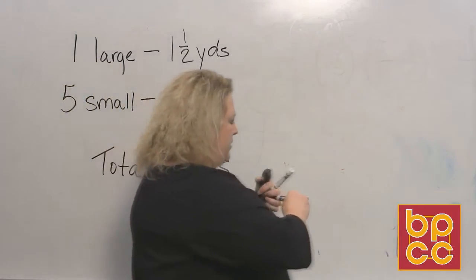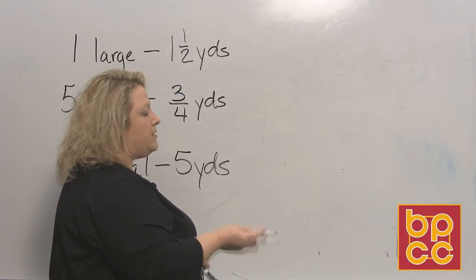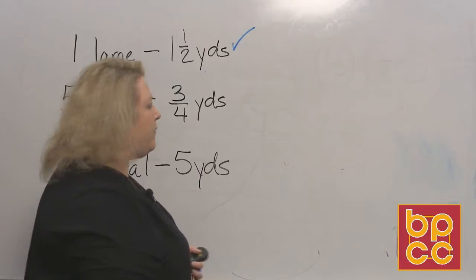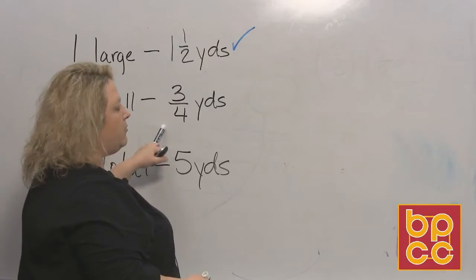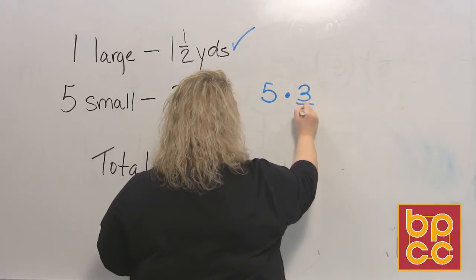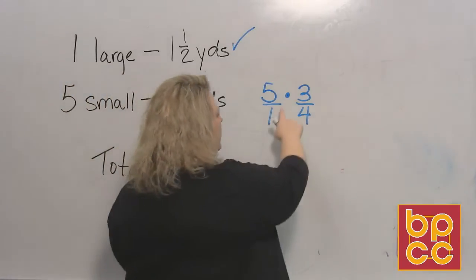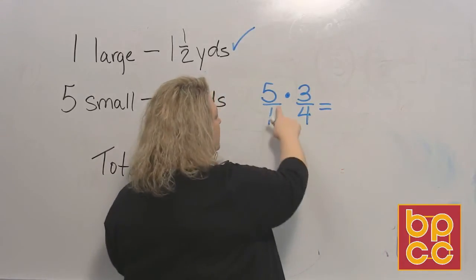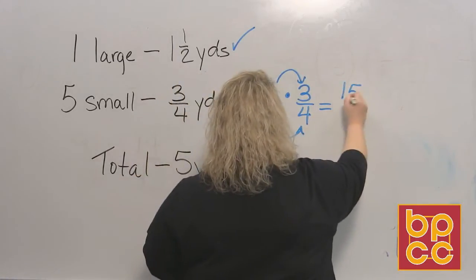The first thing we need to do is find out how many yards altogether. He needs just one large shirt, so that's one and a half yards — no extra work for that one. But for the five small shirts, if each one takes three-fourths of a yard, we need five times three-fourths. We recall our information on multiplying fractions: put a one under the whole number five, check if anything can reduce, then do top times top, bottom times bottom.